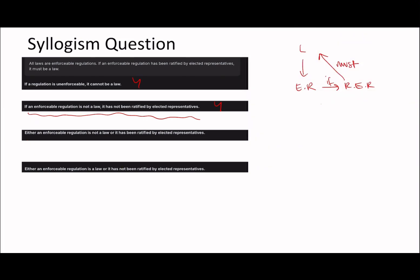'Either an enforceable regulation is not a law or it has been ratified by elected representatives.' Whenever we see 'all' statements it should make our lives easier because we know what we're looking out for. With 'or' questions, the easiest way to disprove any 'or' question is to try and prove that they're both right or both wrong. Can you say an enforceable regulation is not a law and it has been ratified? Well that's wrong, because if an enforceable regulation had been ratified it would have been a law.